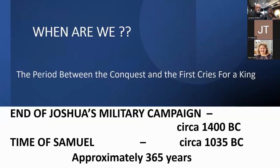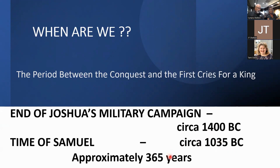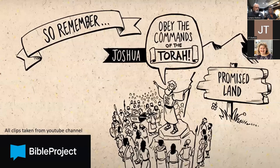The book of Judges covers the period between the conquest and the first cries for a king. Joshua's military campaign ended around 1400 BC; Samuel's time is about 1035 BC. Counting down in BC years, that's a time span covered by Judges of approximately 365 years.